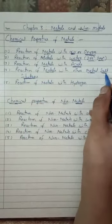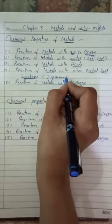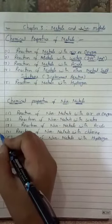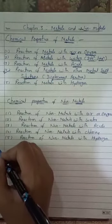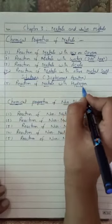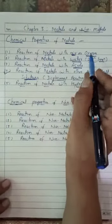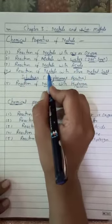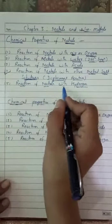The fourth property — reaction of metals with metal salt solutions — can be written in short as a displacement reaction. From this, we will build the activity series of metals given on page 45 of the NCERT book. The fifth property, not in the NCERT book but important to learn, is the reaction of metals with hydrogen. So in summary: reaction with air/oxygen, water, acids, metal salt solutions, and hydrogen.